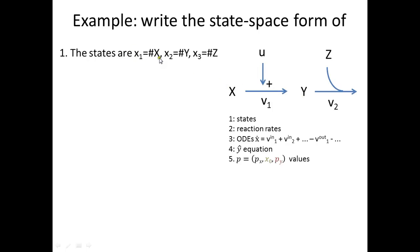But it's not X, Y, and Z because these are chemicals so we need either the concentration or the amount. Let's now just for the sake of it choose amount, so x1 is the amount of X, x2 is the amount of Y, and x3 the amount of Z.